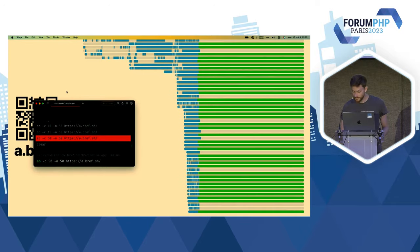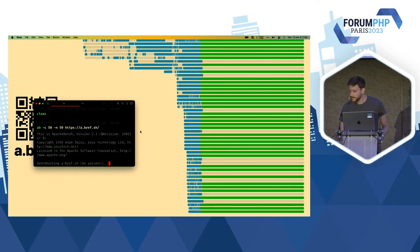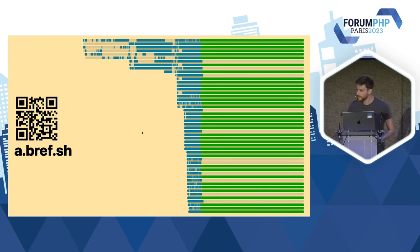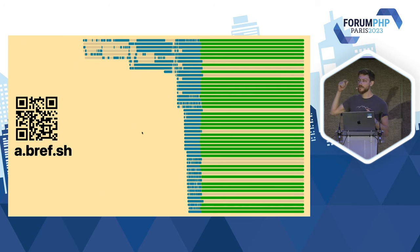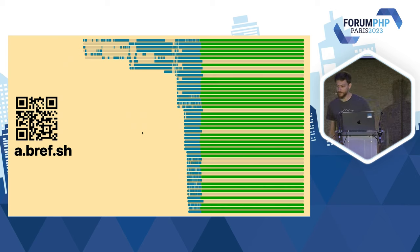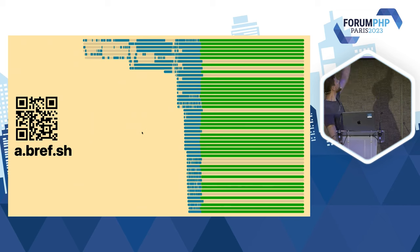J'avais prévu d'envoyer un AB — 50 requêtes en parallèle pour faire scaler à fond — mais vu que mon Wi-Fi n'est pas au top, je pense qu'on est déjà un peu au max. En fait, la manière dont ça marche, c'est l'appli qui tourne sur Lambda, j'ai une connexion WebSocket, j'ai fait un truc en React dans mes slides pour afficher en temps réel les trucs. L'important, c'est qu'on voit cet aspect en cascade où on scale des instances à la volée.